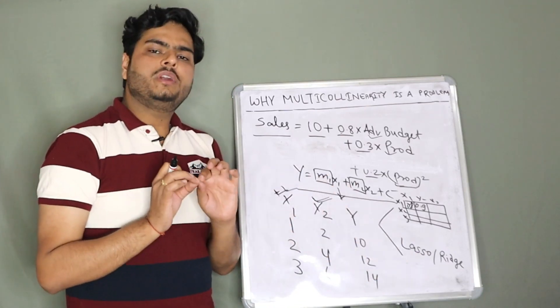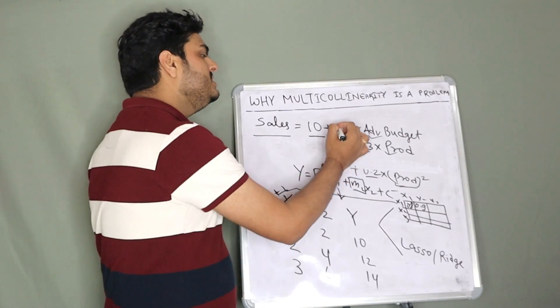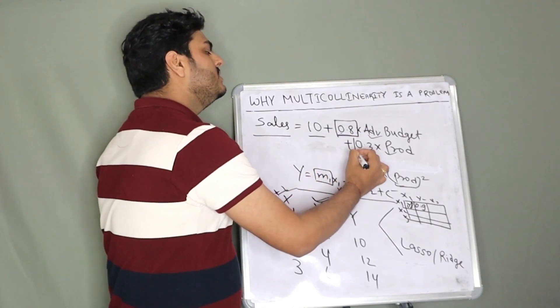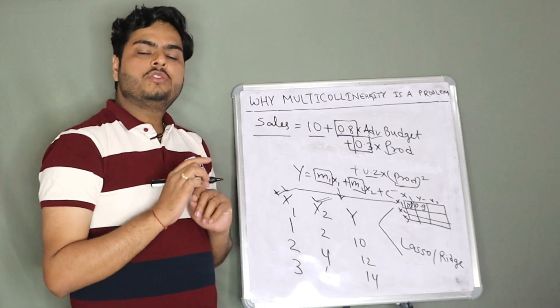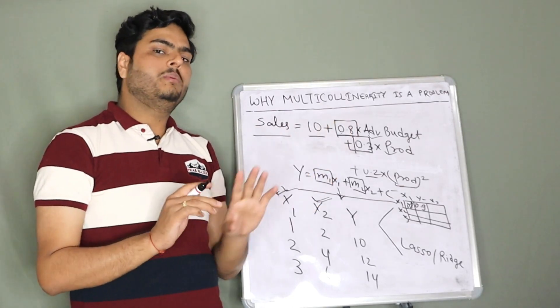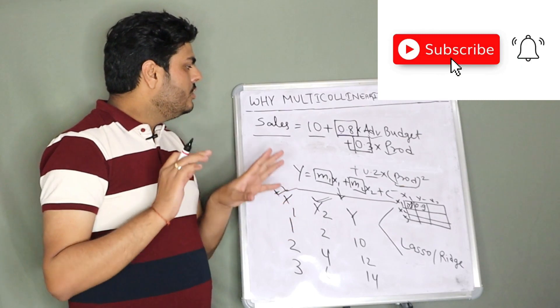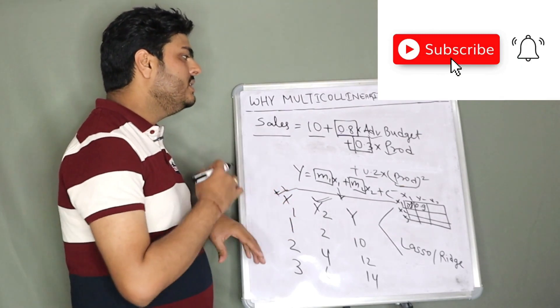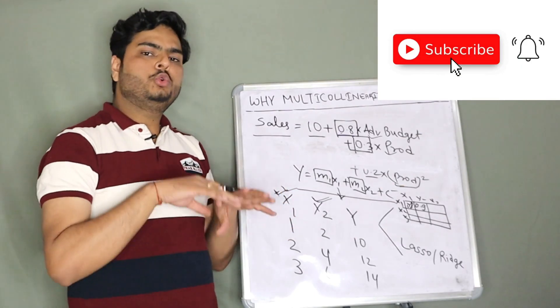And the idea of regression model is to get these coefficients. These are the most important features of a regression model. We cannot let these coefficients get spoiled by anything. So I hope you understood what is multicollinearity, why it is a problem, and how to overcome it.